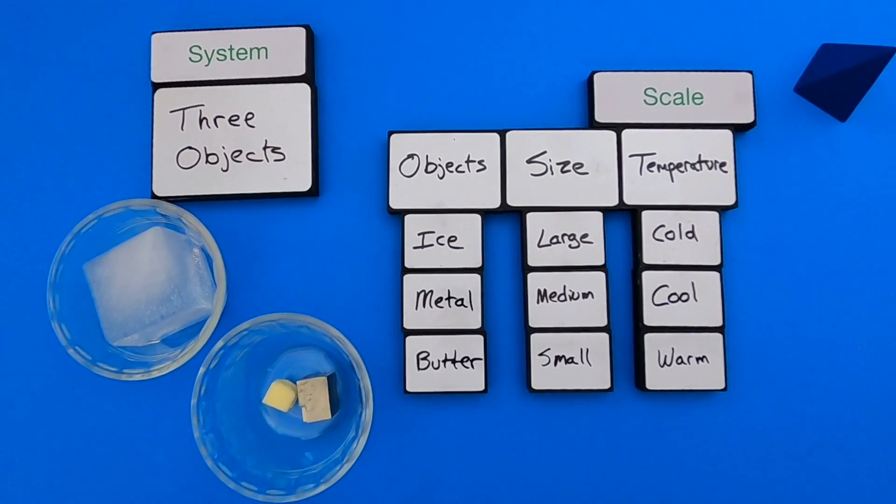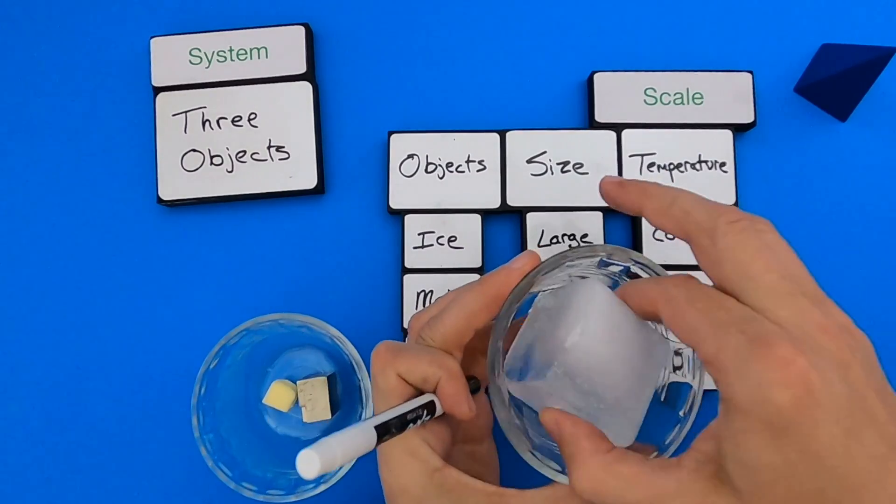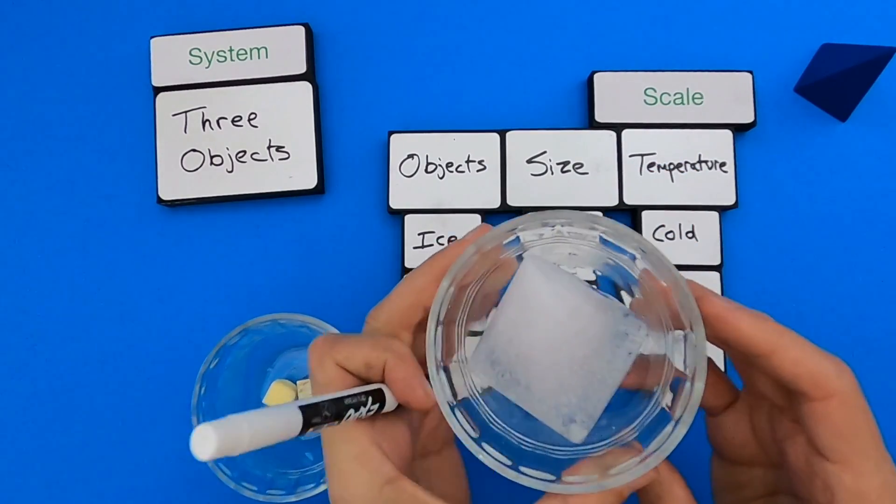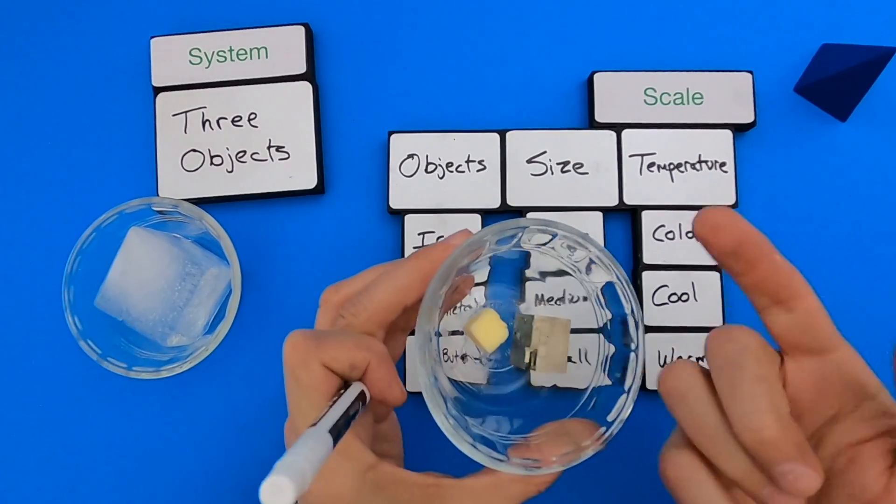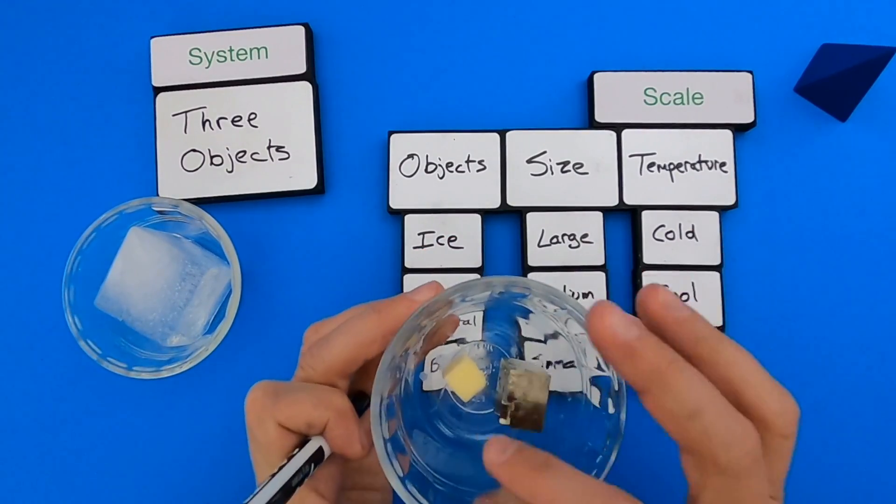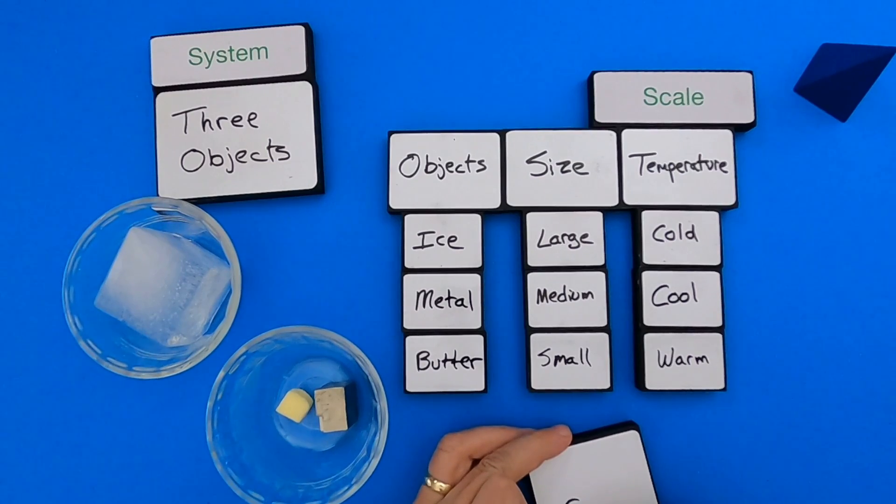What's another type of scale? Well, if I were to watch these for a minute, I would see that the ice, and I can already see that is starting to melt. So there's water in the bottom of this bowl. I would say the butter is not melting, but I know that it's going to melt over time, and the metal is not changing at all. And so what I'm really looking at is a scale of change.